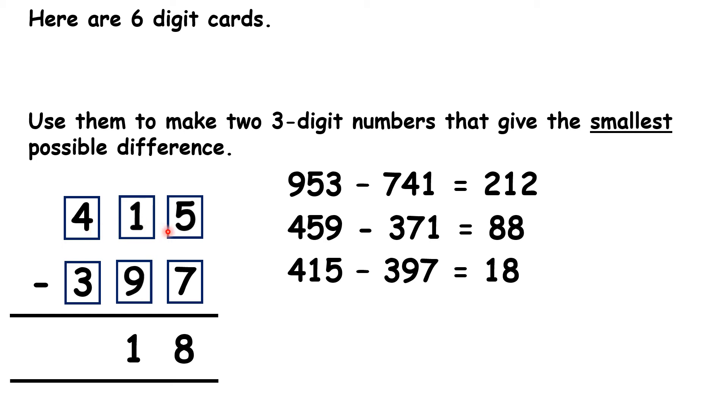So let's try putting 5 and 4 in our hundreds column. Well that's given us an even smaller difference. 513 minus 497 is 16.